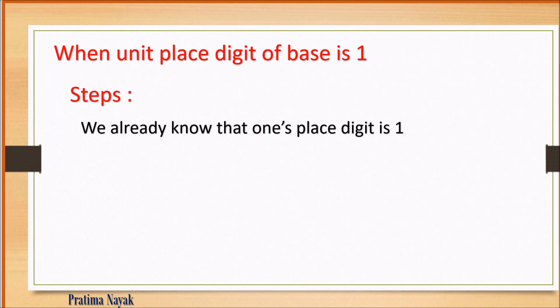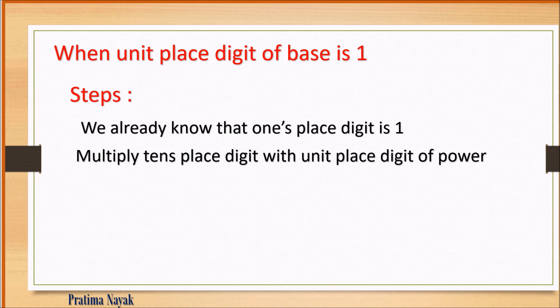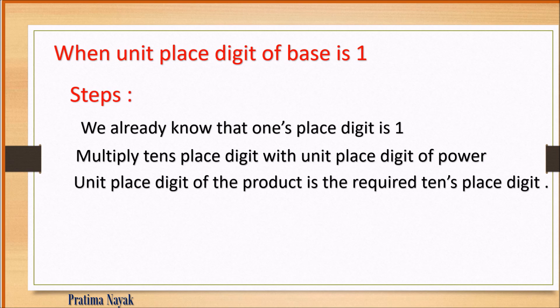Starting with category one: when the unit digit of the base is 1. This is very easy because we already know that when 1 is raised to any power, the unit place digit is always 1. So the unit place digit of the result is always 1.